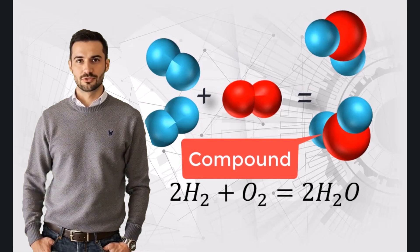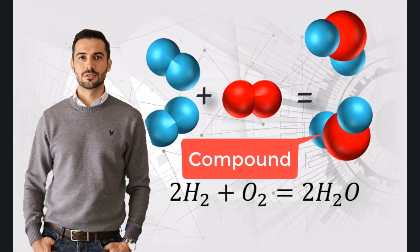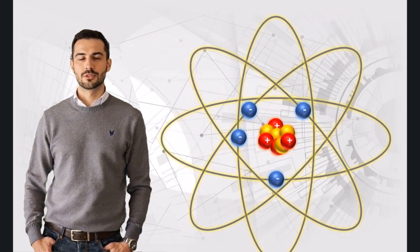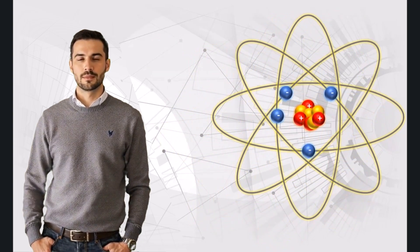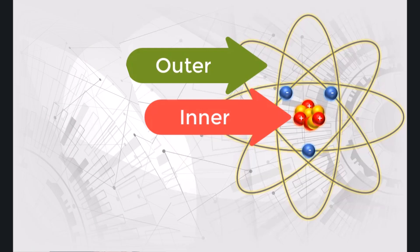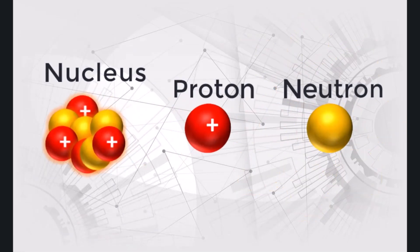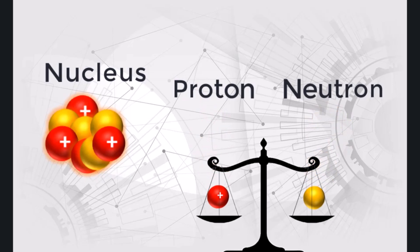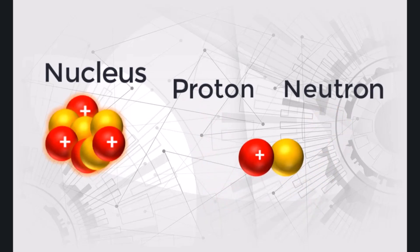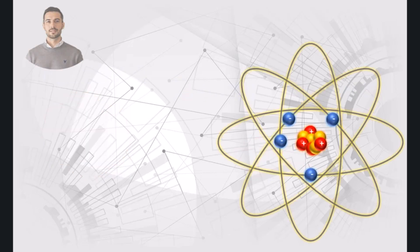Atoms consist of two main parts: the nucleus (core) and the outer region. The nucleus contains protons, which are positively charged particles, and neutrons, which are neutral particles. Protons and neutrons are tightly bound together and account for the atom's mass.